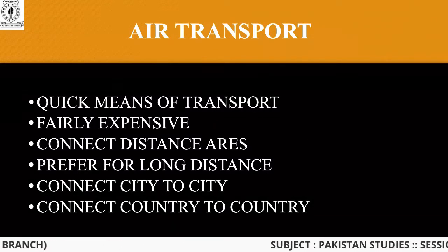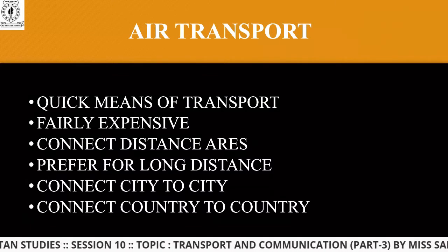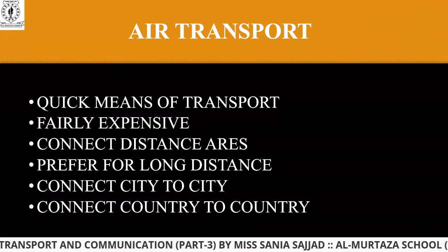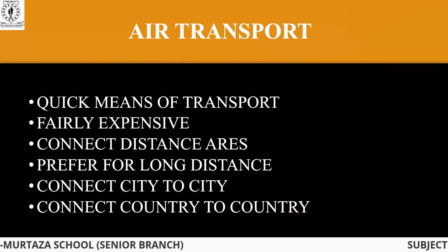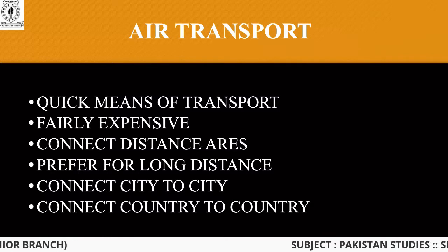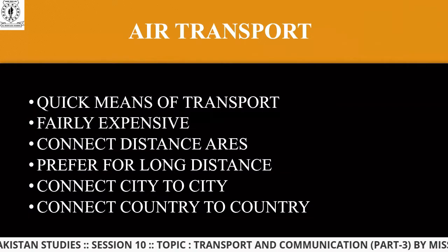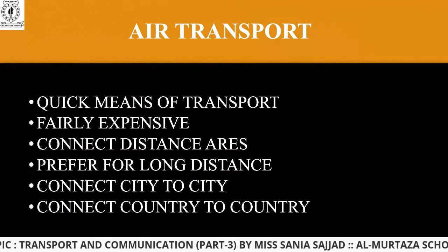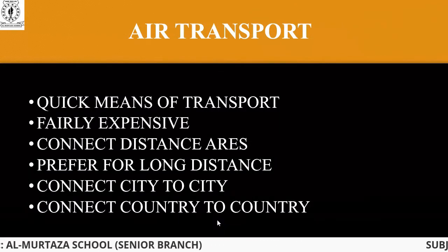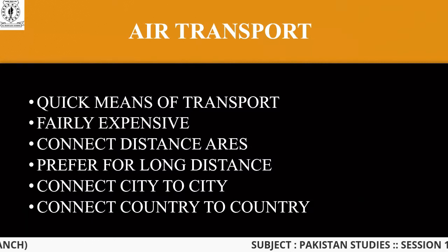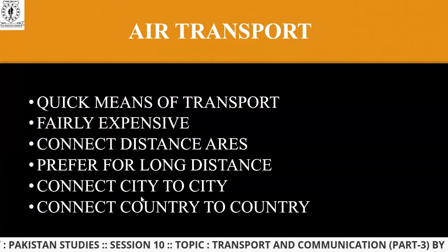Air transportation is basically for country-to-country travel because it covers long distances. If I say I can travel through railways to a different country, that cannot happen because we haven't advanced our technologies to that extent. When we talk about the Karakoram Highway, known as the Silk Route or Silk Road, that road connects China to Pakistan, but other than that we rely on air transportation to travel from country to country.